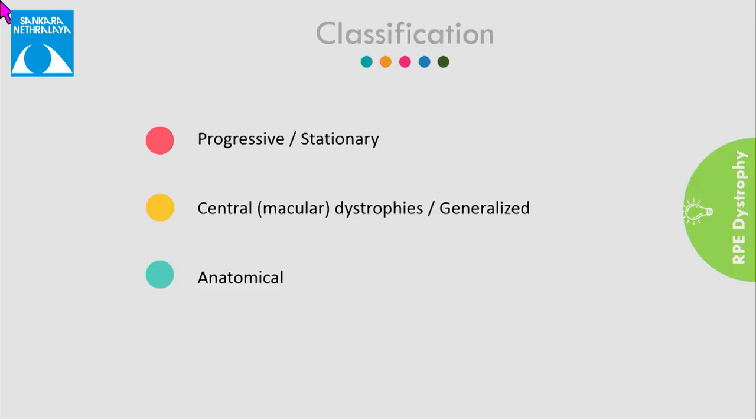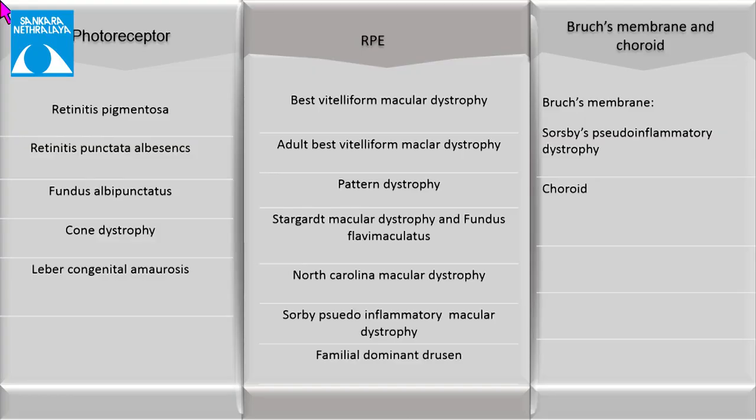Clinically, retinal dystrophies are confusing because of both clinical and genetic heterogeneity. There are several ways to classify them: as progressive or stationary, central or generalized, and on an anatomical basis — those affecting the photoreceptor cells, RPE cells, and Bruch's membrane or choroid.